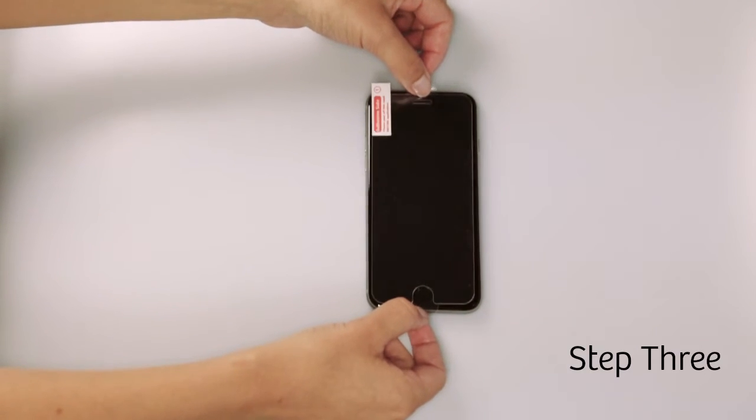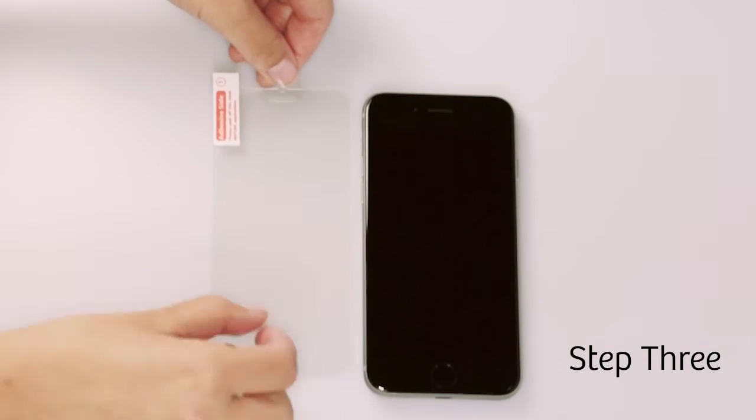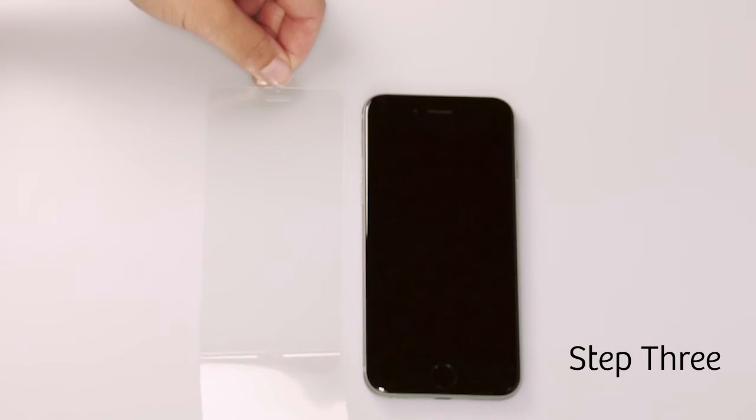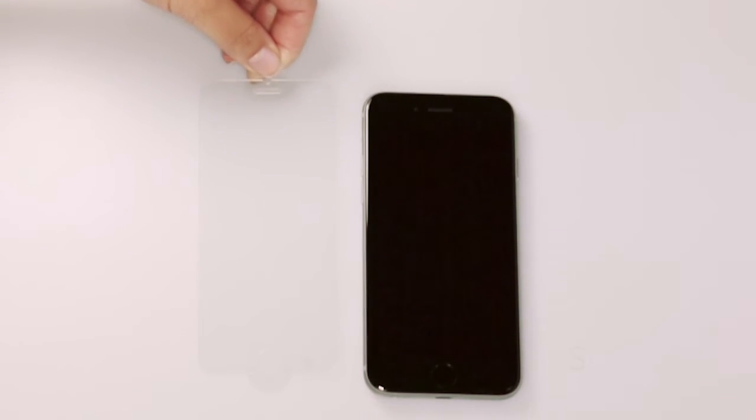Step three: peel off and discard the clear protective film to expose the adhesive side of the glass. Do not touch the adhesive side of the protector or the screen during installation.